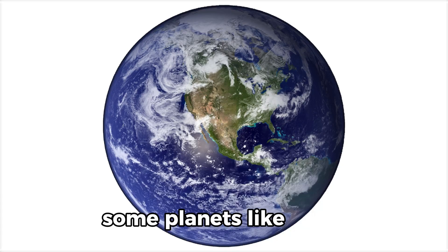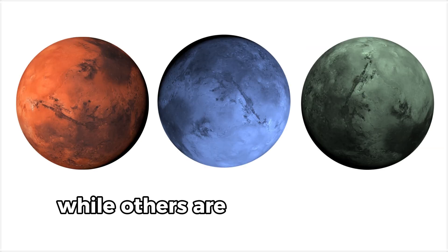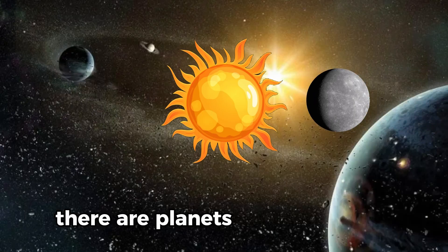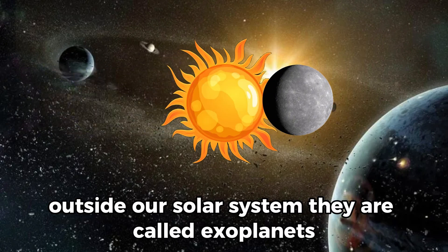Some planets, like Earth, have an atmosphere and are suitable for life, while others are too hot, cold, or toxic. There are planets that orbit stars outside our solar system. They are called exoplanets.